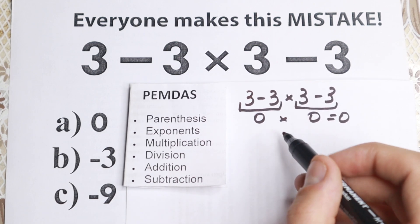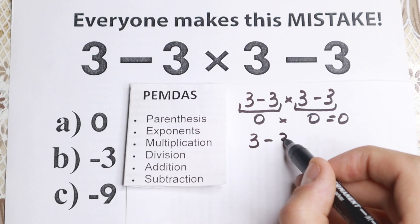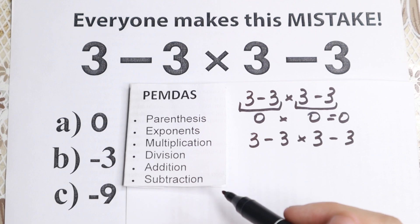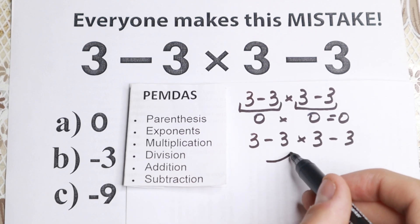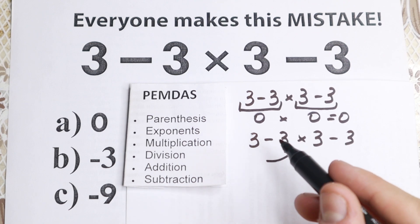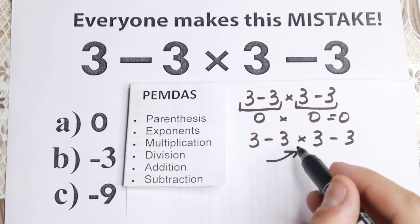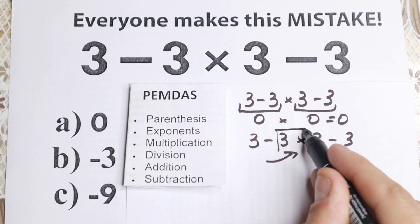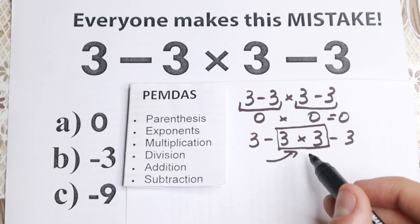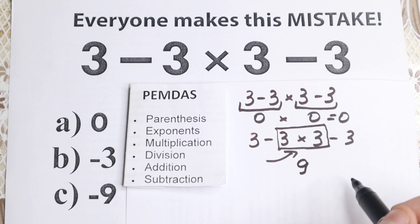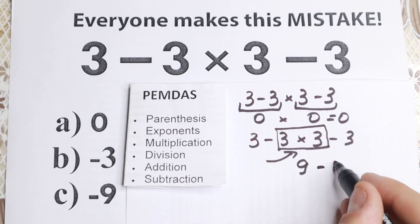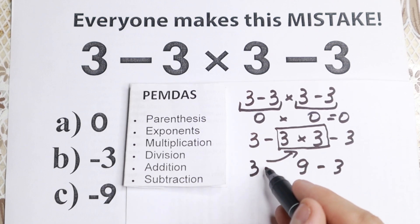Then we have multiplication and division. I'll rewrite this problem once more: 3 minus 3 times 3 minus 3. If we're talking about multiplication and division, yes, we have this multiplication sign right here. We don't have any division sign, but we have multiplication and we need to start with this step. So 3 times 3 equals 9. And we still have this expression in the beginning and in the end. We have 3 minus 9 minus 3.